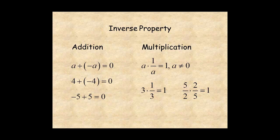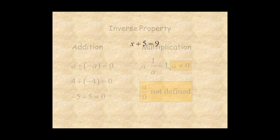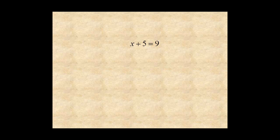Also, zero does not have an inverse — division by zero is not defined in algebra. As with the commutative and associative properties, the identity and inverse properties seem so simple and obvious they are often passed over quickly without much thought.